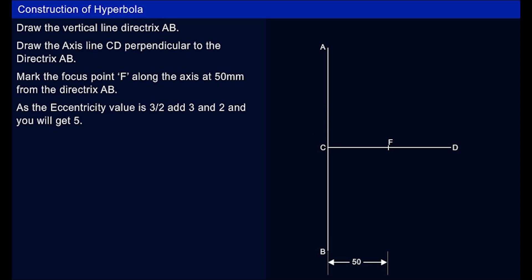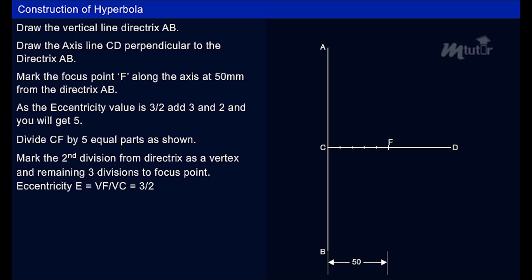As the eccentricity value is 3/2, add 3 and 2 and you will get 5. Divide CF by 5 equal parts as shown. Mark the second division from directrix as a vertex and remaining 3 divisions to focus point.